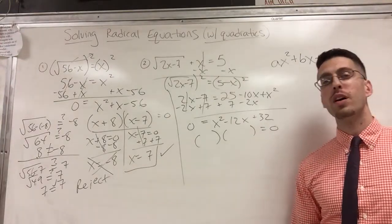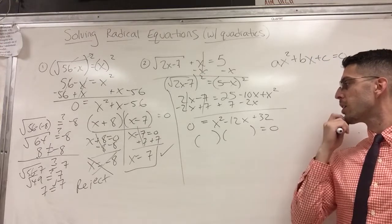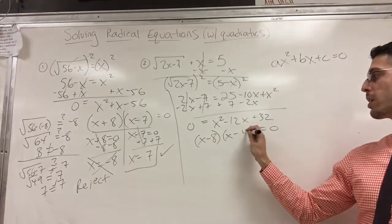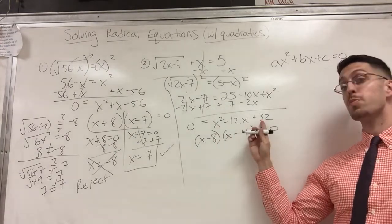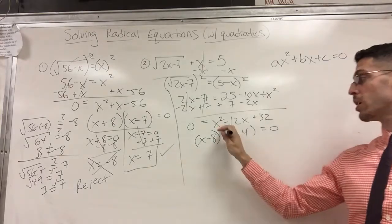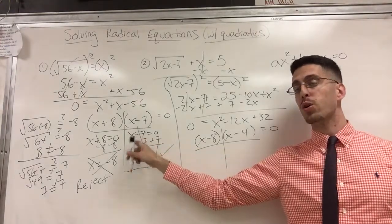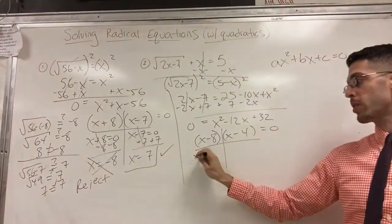So now I'm ready for sum product. Again, what times what is 32 and it adds to negative 12? I think they both have to be negative. So I got my x and my x, minus and minus, and I'm going to go with 8 times 4. Minus 8, minus 4. Negative 8 times negative 4 is positive 32, and it adds to negative 12. So I'm good. I'm going to do my t-chart, and if you show your work you'll notice you get the opposite sign as your solution. So I'm going to skip a couple steps. You're either going to get 8 or 4. Both positive, so it's easy to check.